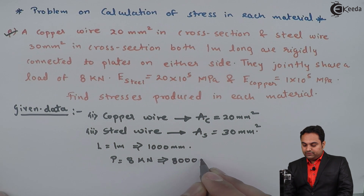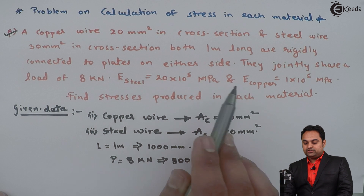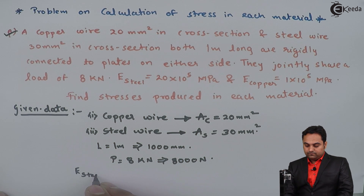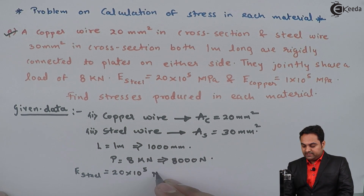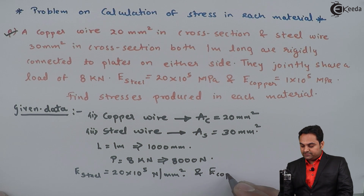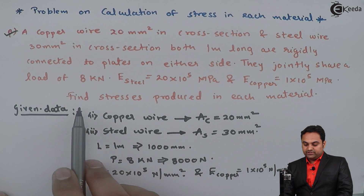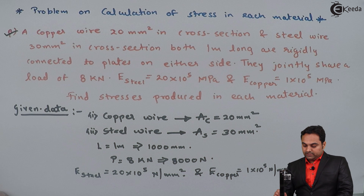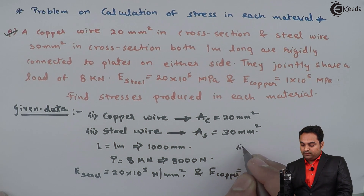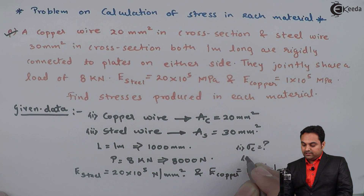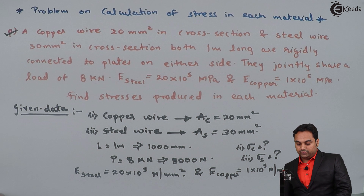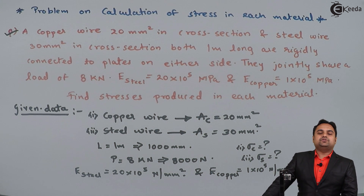Young's modulus for steel is 20 into 10 raised to 5 megapascal, which I can write directly in terms of Newton per mm square. Young's modulus for copper is 1 into 10 raised to 5 Newton per mm square. The question is to find the stresses produced in each material — how much is the stress in copper and how much is the stress in steel.